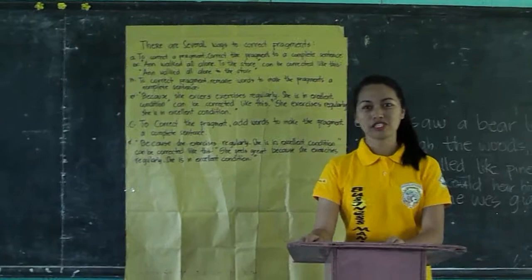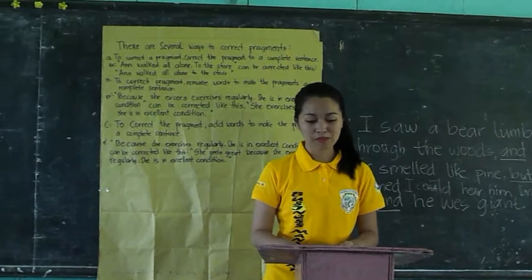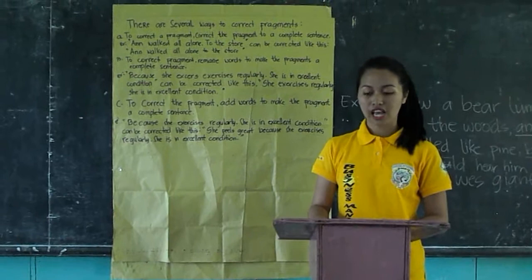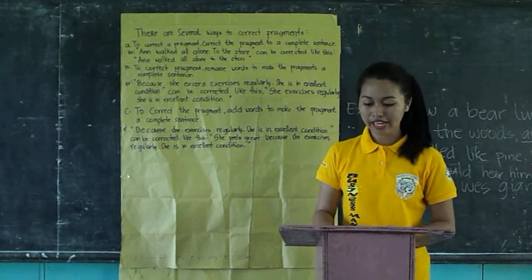A sentence fragment is not a complete sentence. Some fragments are incomplete because they lack either a subject or a verb. The fragments that most students have trouble with, however, are dependent clauses. They have a subject and verb, so they look like a complete sentence, but they don't express a complete thought. They are dependent because they cannot stand on their own.